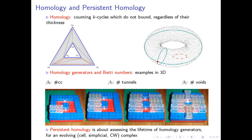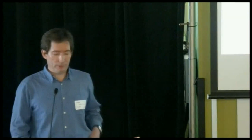A very important concept is persistent homology. When one creates a cell complex, simplicial complex, or CW complex by incrementally adding pieces, at some point a tunnel appears and later it is destroyed. The persistence of a homological feature is its lifetime during the whole construction of the complex.